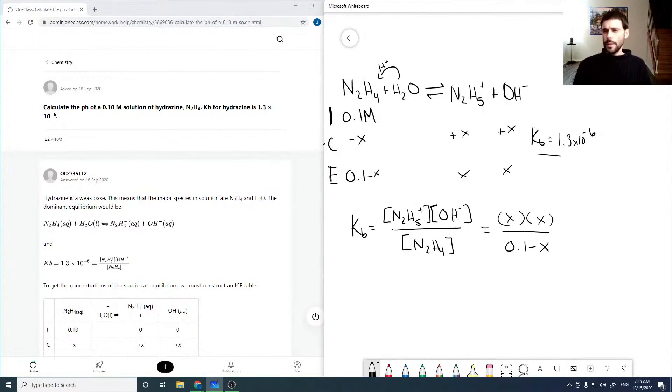Now, because our Kb is so small, our value of x is also going to be very small. And so then the assumption here is that 0.1 minus x is approximately 0.1. And that simplifies things, because now we can write that 1.3 times 10 to the minus 6 is just x squared over 0.1.